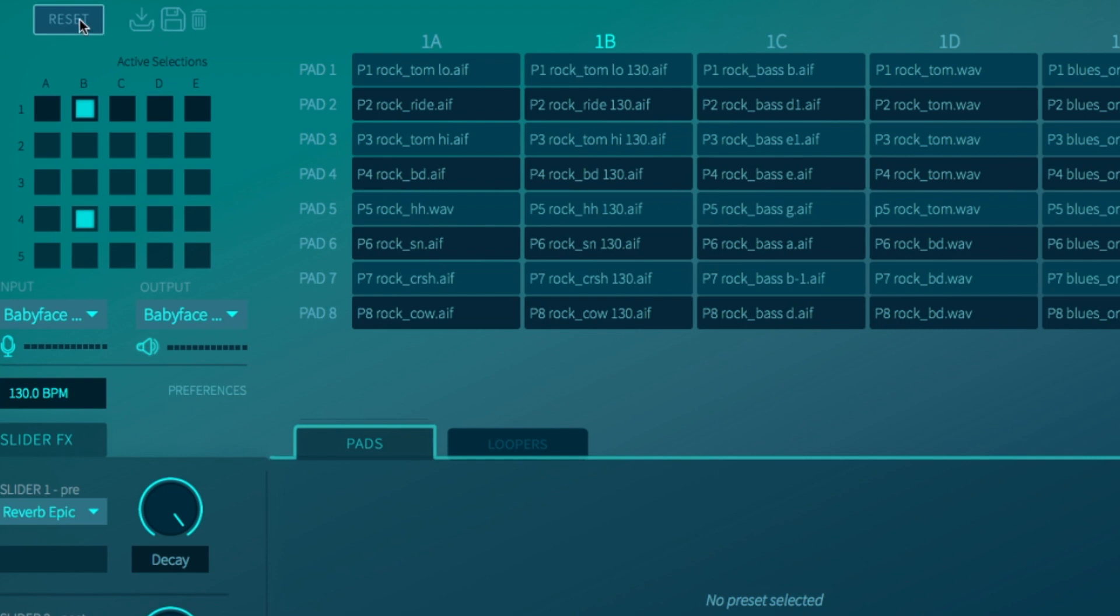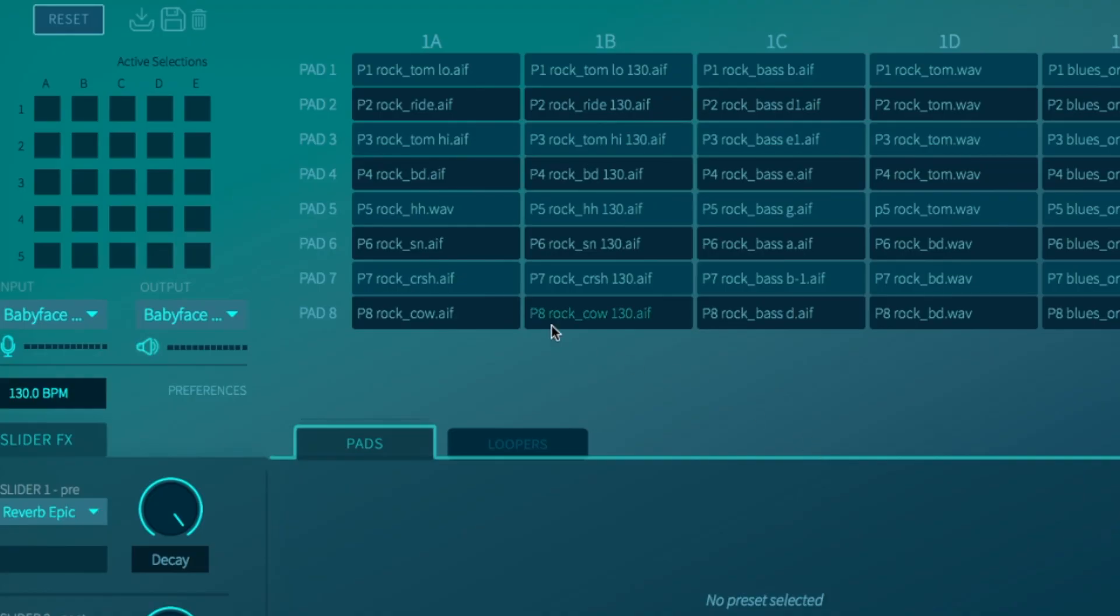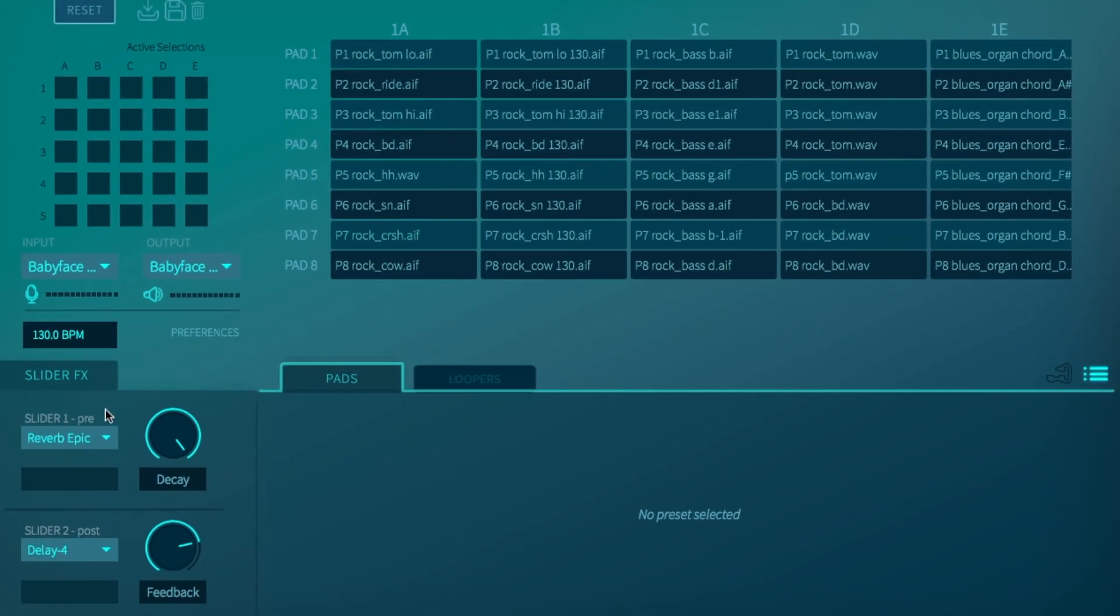The reset button brings back the default state with all presets off. Just like at the beginning with the pop-up window, which was described in the first video of this tutorial series. Only press this button if you are sure that you deselected all presets in all different modes.